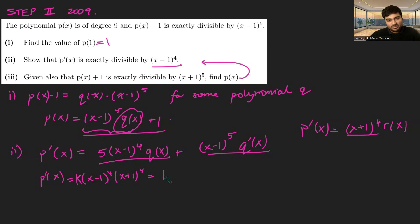So p'(x) must be this form, which we can expand out as (x^2 - 1)^4, which is k times (x^8 - 4x^6 + 6x^4 - 4x^2 + 1). And now just doing some bog-standard integration, we get that p(x) equals k multiplied by (1/9 x^9 - 4/7 x^7 + 6/5 x^5 - 4/3 x^3 + x) plus a constant c.